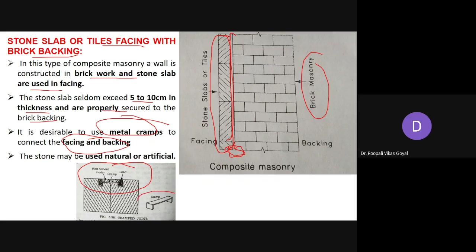The cramp can be inserted and the joint filled with lead or rich cement mortar. The stone used on the front side may be natural stone or artificial stone. Proper bonding between the two different materials is an essential requirement of composite masonry, and metal cramps with lead or rich cement mortar provide an effective joint between stone and brickwork.